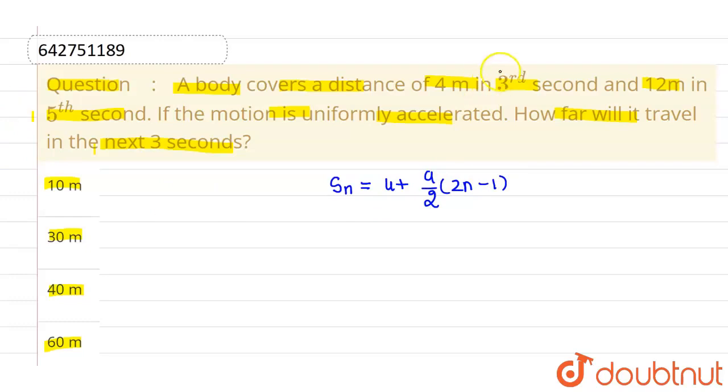So using this formula, we know that in 3rd second the displacement is 4 meter. So 4 will be equals to u plus a by 2 into 2 into 3 minus 1. So this can be written as u plus 5a by 2.